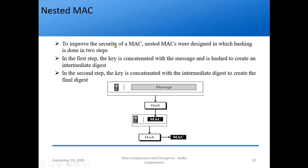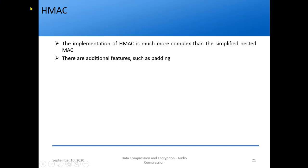To address this vulnerability we use a nested MAC, where the MAC and key are applied two times. We have a message and a key; we apply a hash function to get a MAC, then on that MAC we again use a key and apply a hash function to get another MAC. This is called nested MAC. Then we use HMAC — Hash-based Message Authentication Code — which is much more complex than the simplified nested MAC because it uses padding.